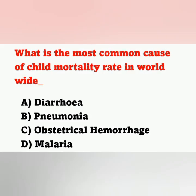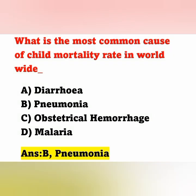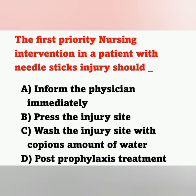Next question: What is the most common cause of child mortality worldwide? Options: option A diarrhea, option B pneumonia, option C obstetrical hemorrhage, option D malaria. The correct answer is option B, pneumonia. The most common cause of child mortality worldwide is pneumonia.